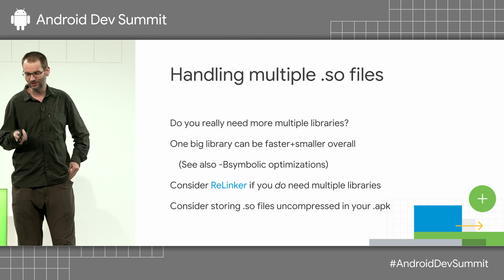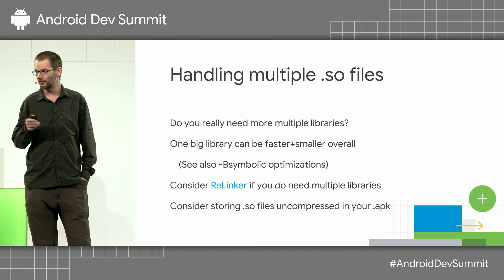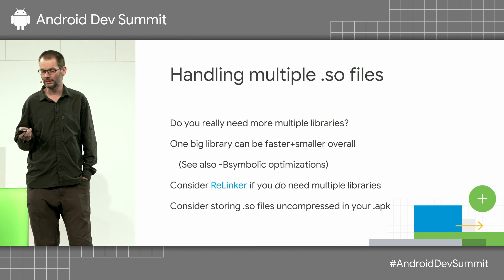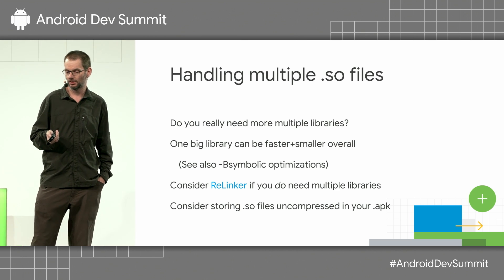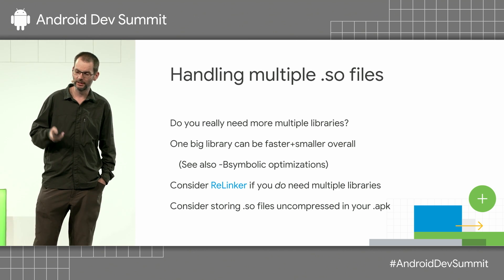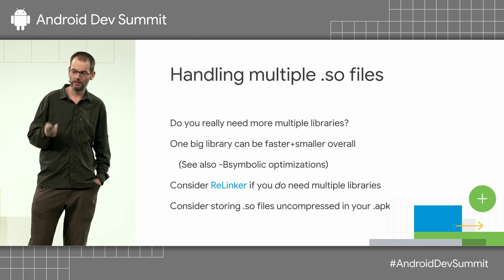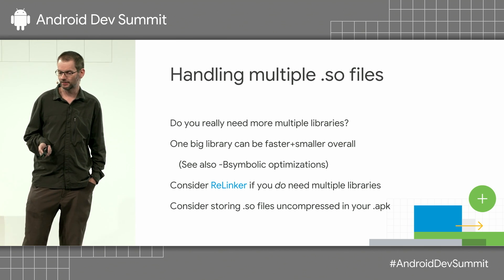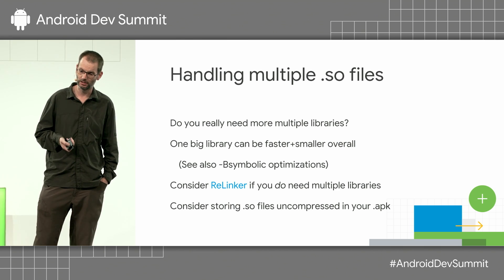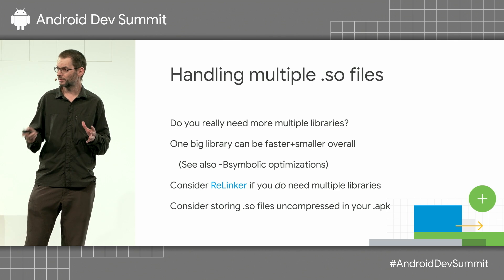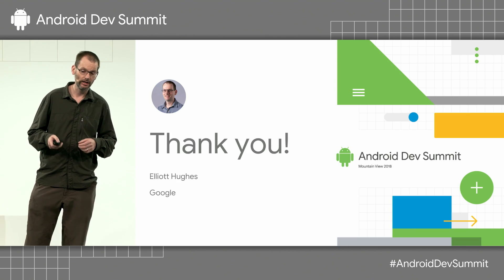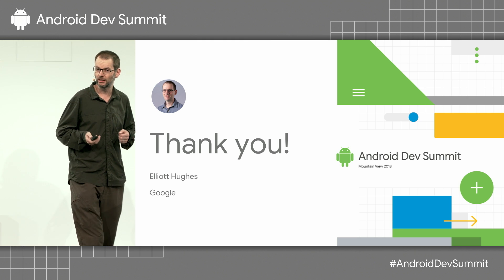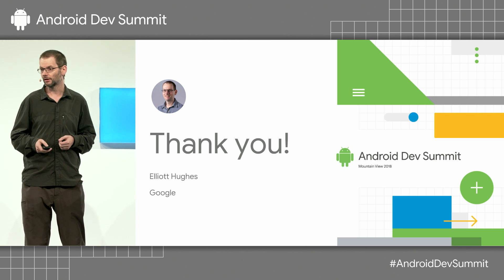I'm running out of time, so I'll go through this quickly. If you need to worry about old Android releases and you have multiple SO files, that can get very tricky — we recommend you consider the Relinker project, which you can find on GitHub. Storing SO files uncompressed was mentioned earlier in the keynote. One big library is generally better than lots of small libraries. Thank you — if you have questions, come and find me. I'll be doing open hours all afternoon.